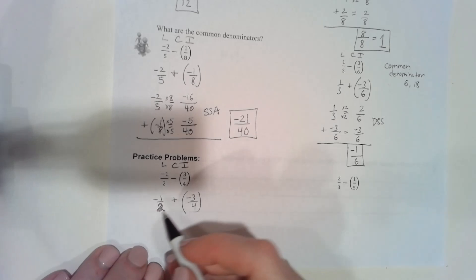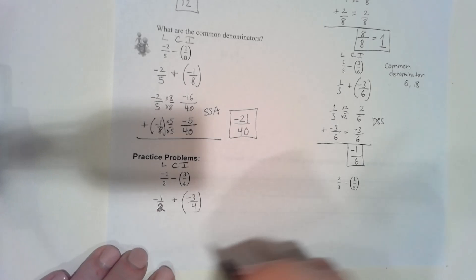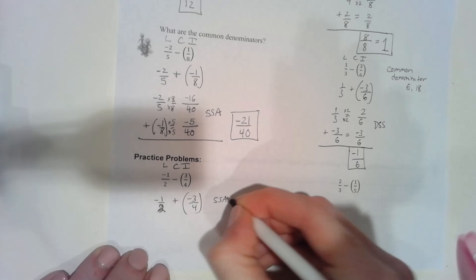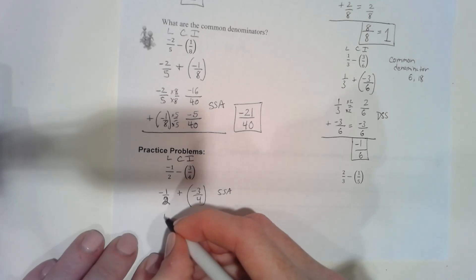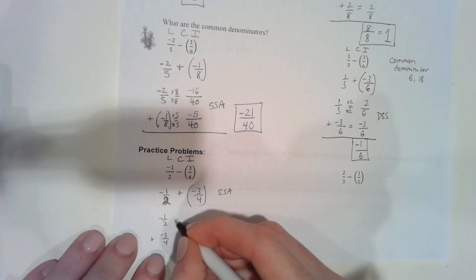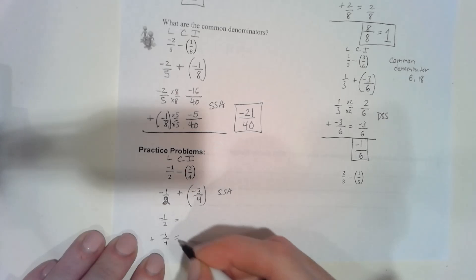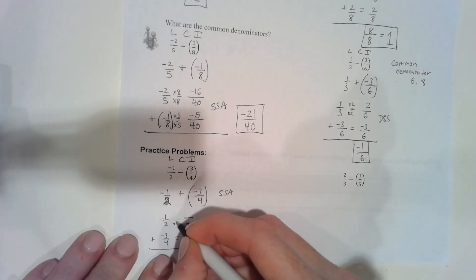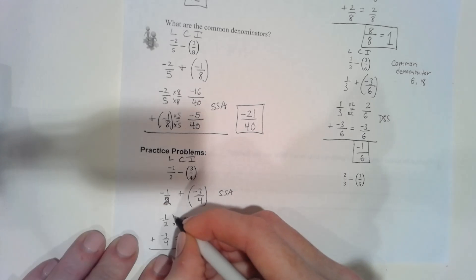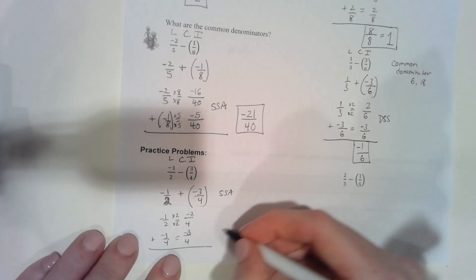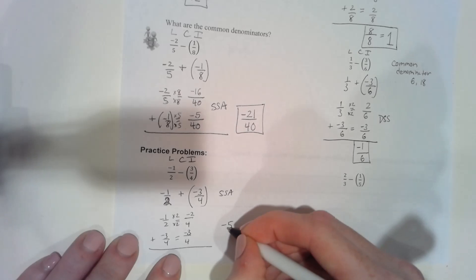Now I have same signs because I have two negatives, but I need a common denominator first. The least common denominator is four — you could also use eight. After renaming, the final answer will be negative five-fourths.